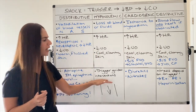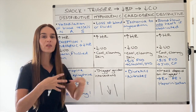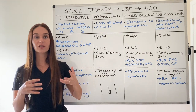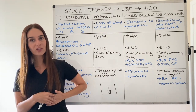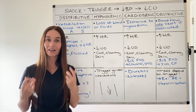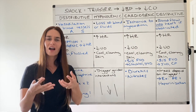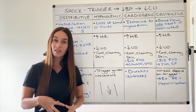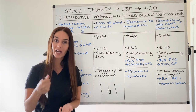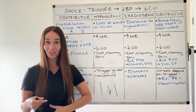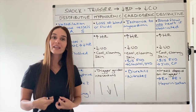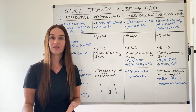Hypovolemic shock follows all the universals from the first video, but don't discount your trigger. If it's a gunshot wound causing hemorrhage, of course you apply pressure. For a postpartum hemorrhage, the uterus needs to contract — there are medications to help with uterine contraction and techniques like fundal massage to stop the bleeding. Always address the underlying trigger.